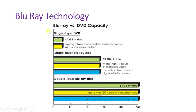A single-layer DVD holds 4.7 GB — enough for one or two standard-definition movies with some extra features. A single-layer Blu-ray disc holds about 27 GB, equivalent to 13 hours of standard video or more than two hours of high-definition video. A double-layer Blu-ray disc holds 54 GB, which can store about 20 hours of standard video or 4.5 hours of high-definition digital video.